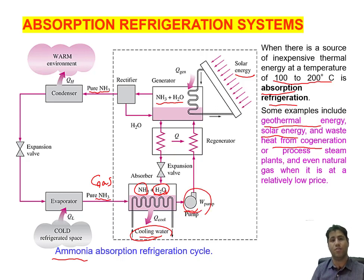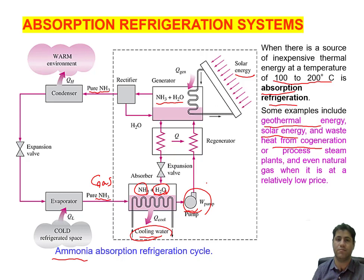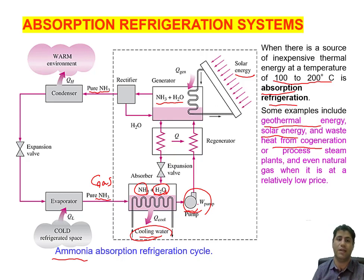The reason this absorption refrigeration system works is that instead of compressing a gas, we only transfer liquid. The required work to transfer liquid by a pump is much lower than the work required to compress gas. As we discussed in previous chapters, the required work input for any medium depends on the specific volume of the working fluid — the lower the specific volume, the lower the work input for the pump.